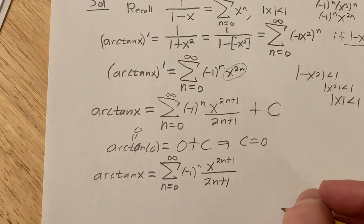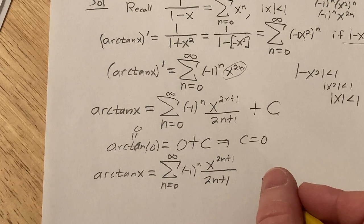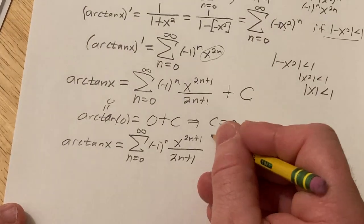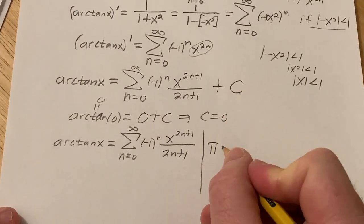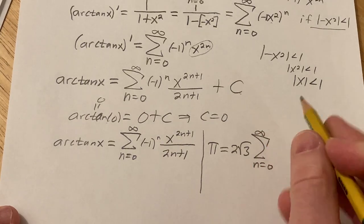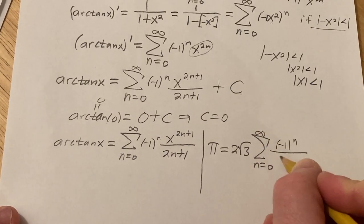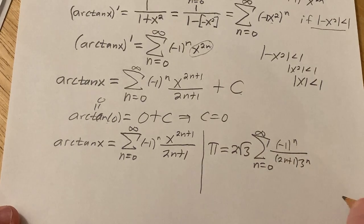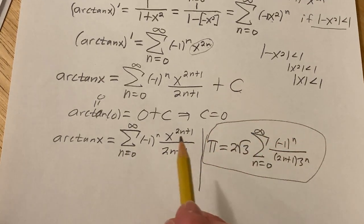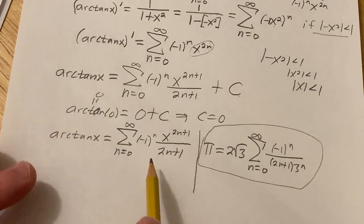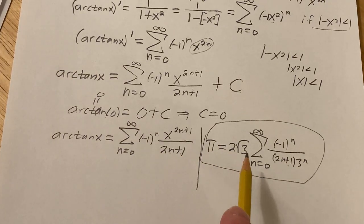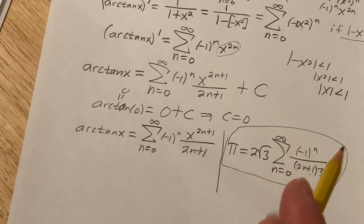Now we have to use the arctan power series to come up with the identity: pi equals 2 square root of 3 times the infinite sum as n equals 0 to infinity of negative 1 to the n over (2n plus 1) times 3 to the n. That's the identity we're trying to show. I was thinking: what's going to give me a square root of 3? And I decided to use this fact.